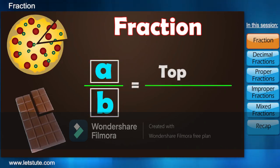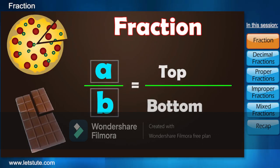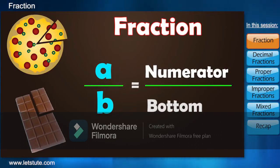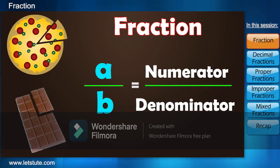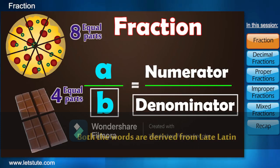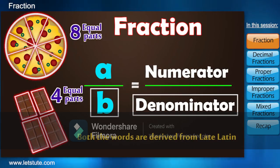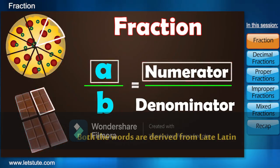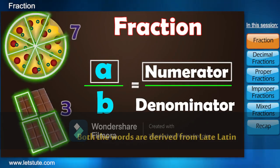The top part is known as numerator and the bottom part is called as denominator. Denominator is the total number of equal parts in which the whole is divided into. And numerator is the number of equal parts which have been taken out or which have been left out.